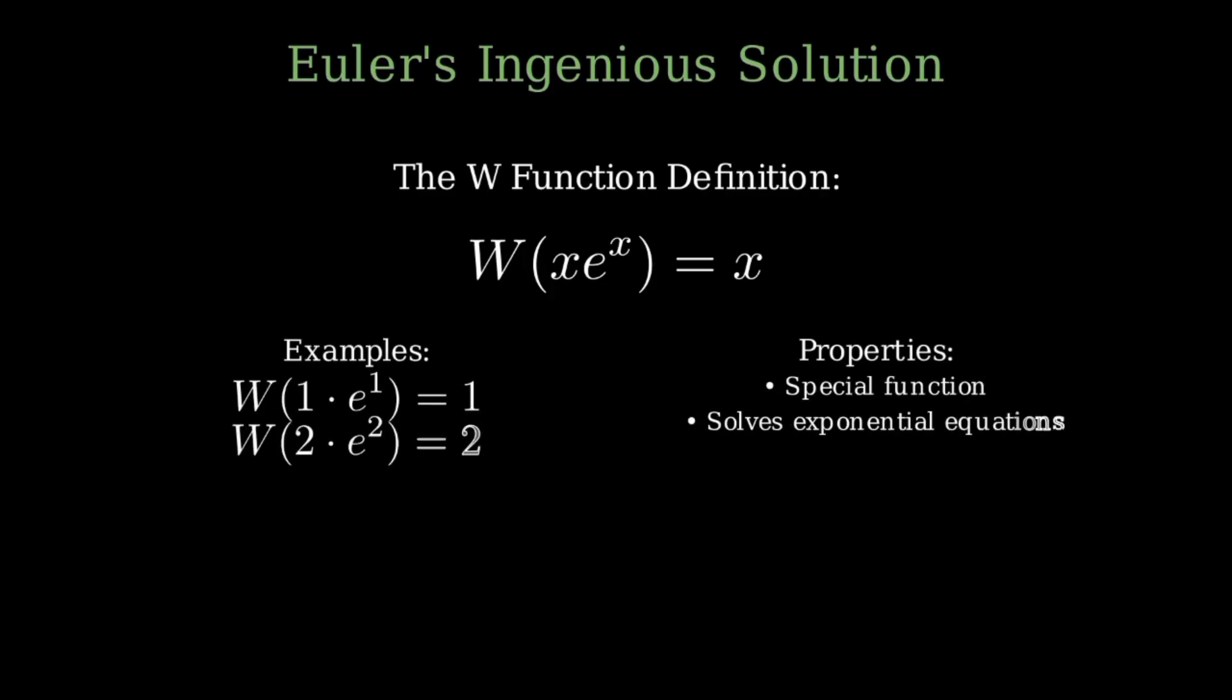If x equals 1, then W of 1 times e to the 1 equals 1. If x equals 2, then W of 2 times e to the 2 equals 2.